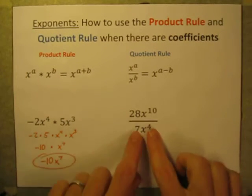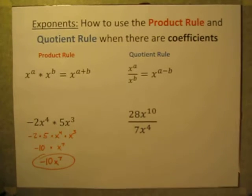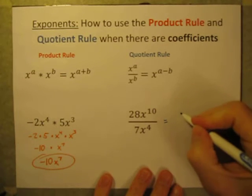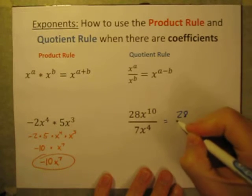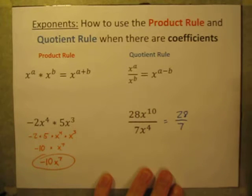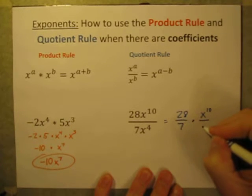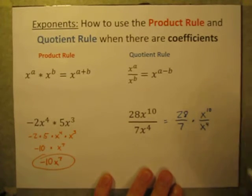But let's kind of separate it with the numbers and the variables in two separate pieces. So let's start with, let's say this is equal to 28 over 7 times, and now let's do the x's, the x terms, x to the 10th power divided by x to the 4th power.